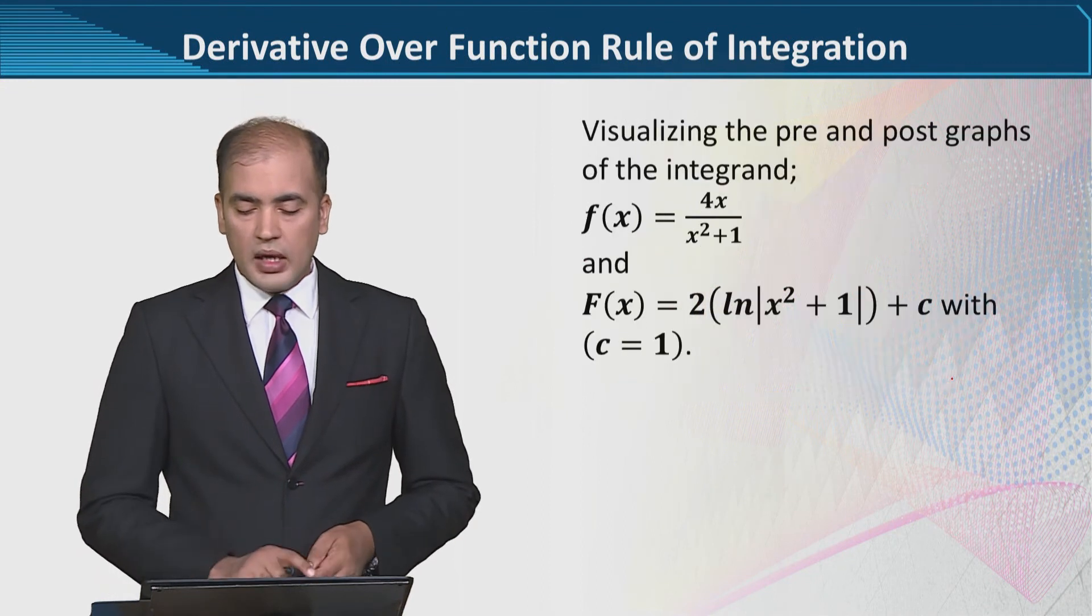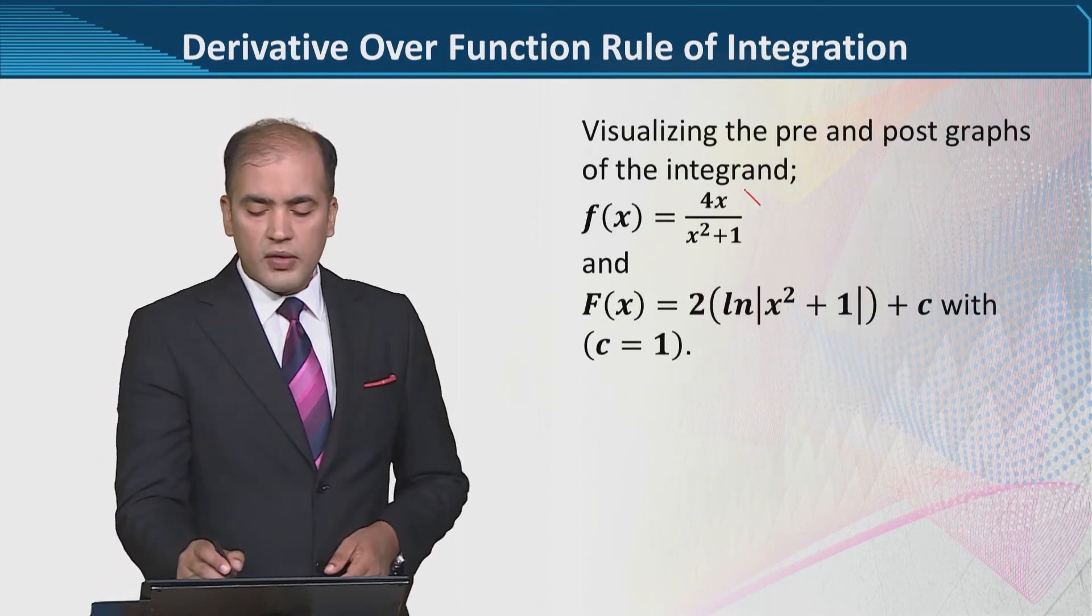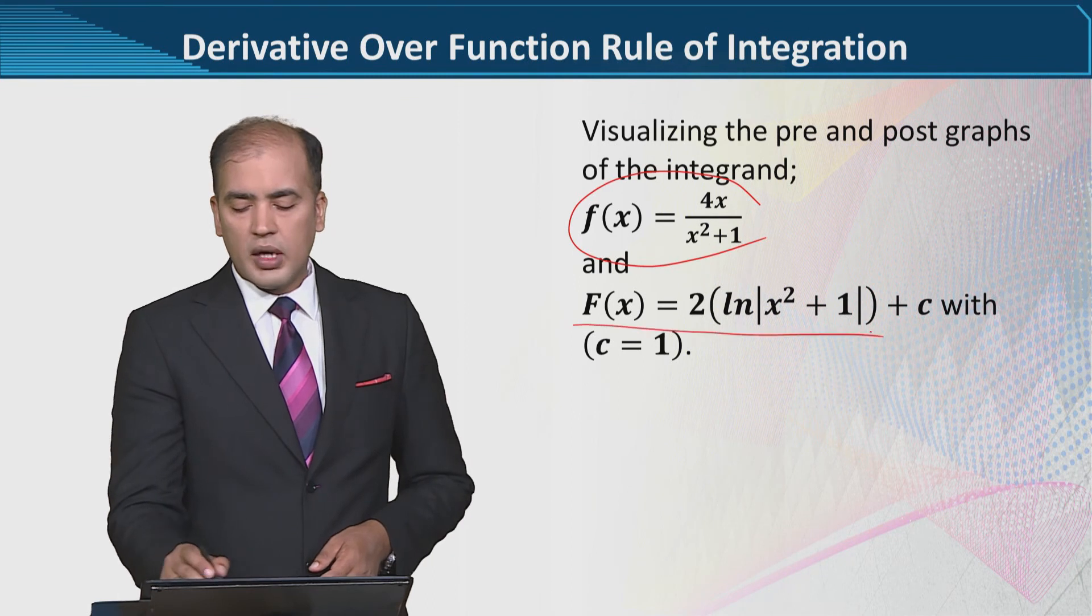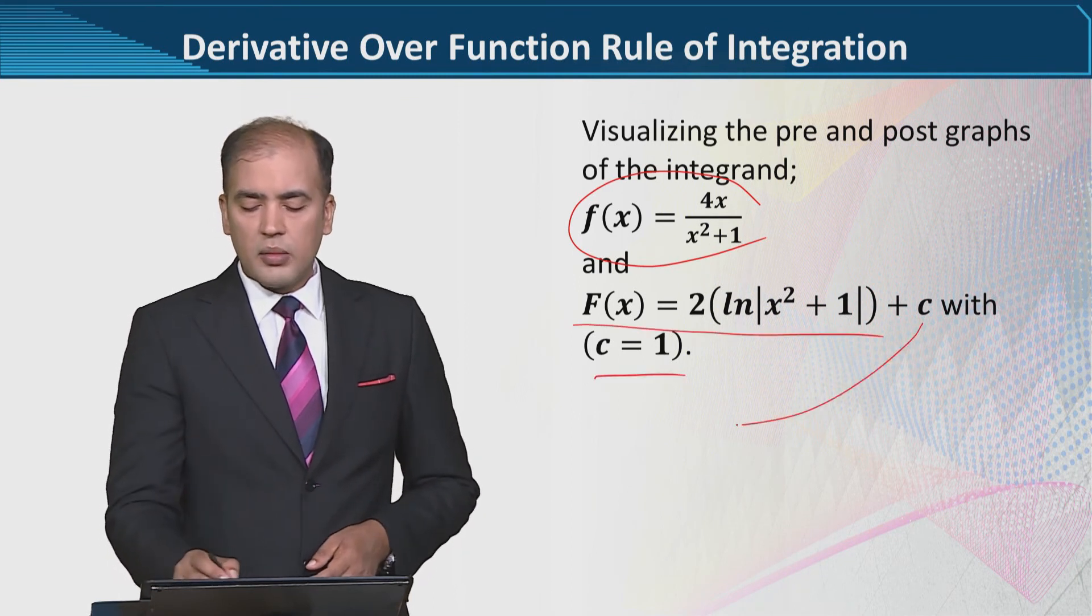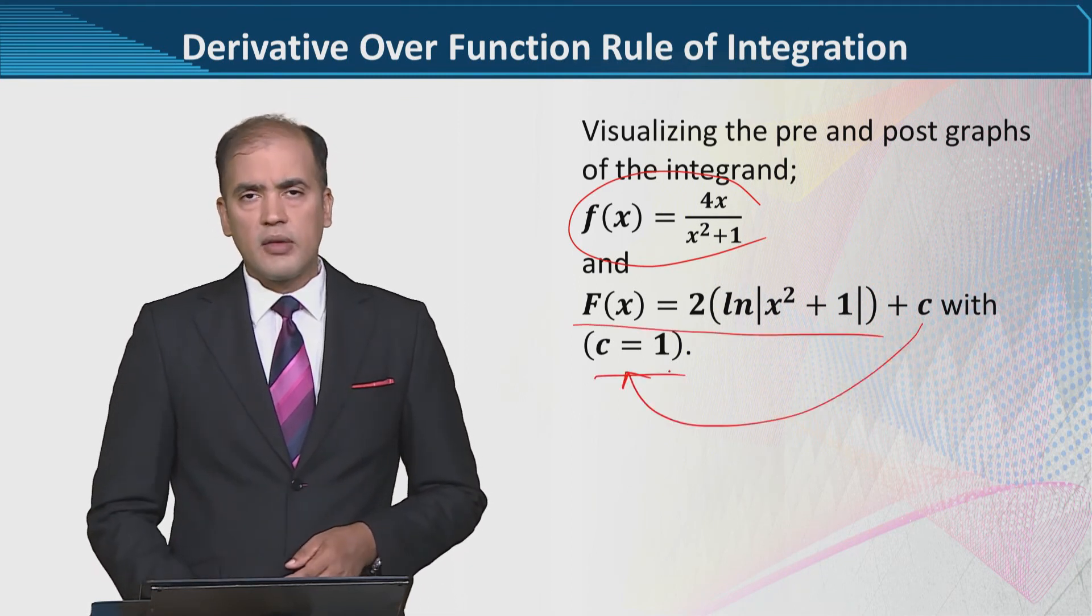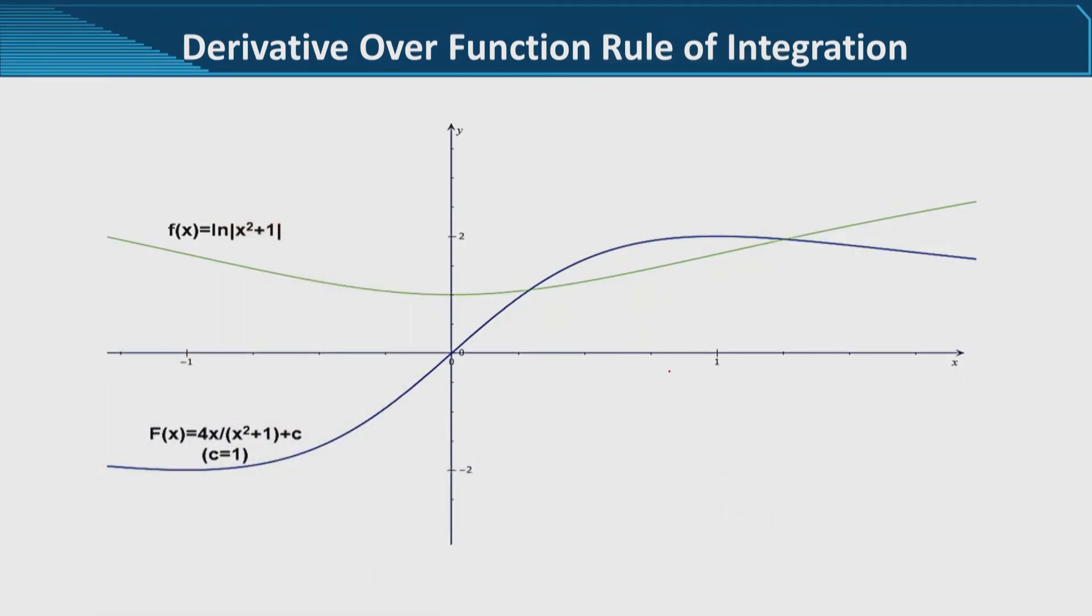We can also visualize this. The original function was this, and after integration the result came out to be this. We considered c as 1 for the time being, and when we plotted it, you're seeing that the given function was this, and after that we have this. This would be F(x) capital, and this is the small f(x). This was given, small f(x), and when we integrated it the curve's shape changed.